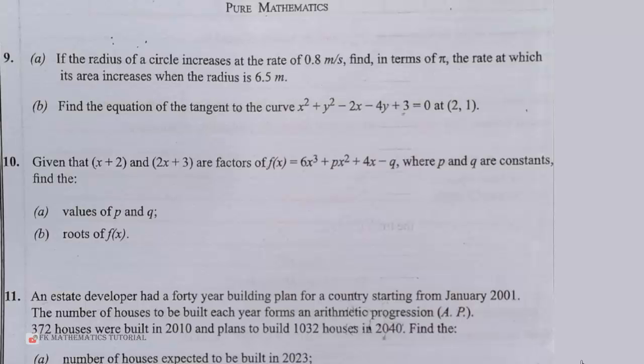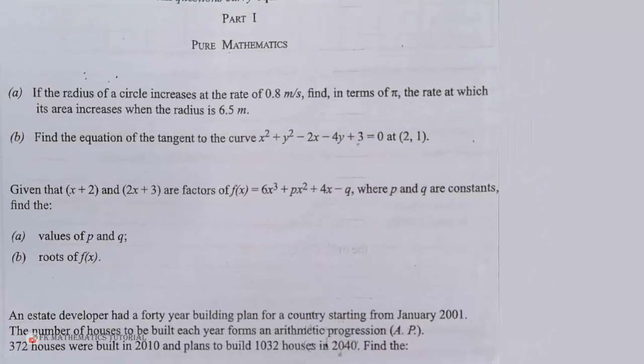So we are given the following information: we are told that the rate at which the radius increases is 0.8 meters per second. That is dr/dt is 0.8 meters per second. Then we are also given the radius to be 6.5 meters, but we are not given the rate at which the area increases. So we are going to calculate that one.